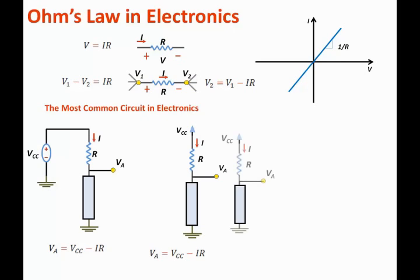The box can be replaced by a big circuit or a single element. For example the box can be replaced by a resistor as shown here. Because the current is flowing downward through the resistor we can state that VA is equal to VCC minus I times R.